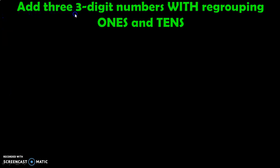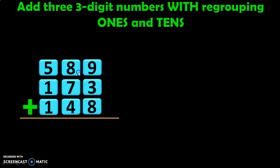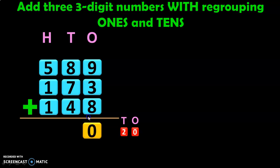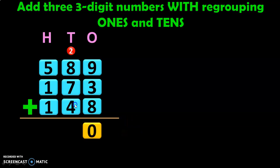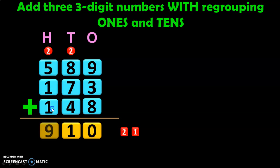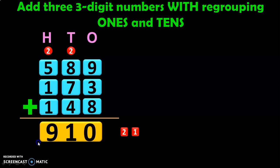Add three three-digit numbers with regrouping ones and tens. We have 589 plus 173 plus 148. Begin by adding the ones place: 9 plus 3 is 12, and 12 plus 8 is 20. Retain 0 in the ones place and carry over 2 to the tens. 2 plus 8 is 10, 10 plus 7 is 17, and 17 plus 4 is 21. Retain 1 in the tens place and carry over 2 to the hundreds. 2 plus 5 is 7, 7 plus 1 is 8, and 8 plus 1 is 9. So, the answer is 910.